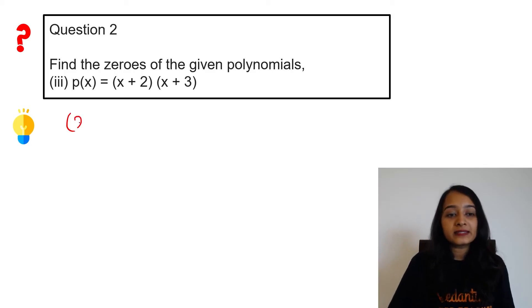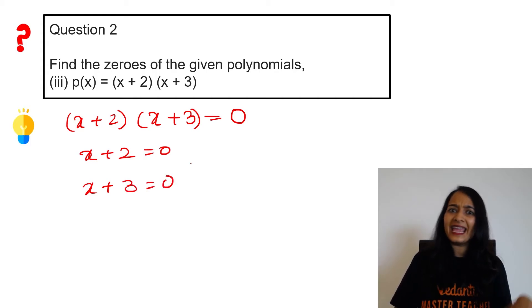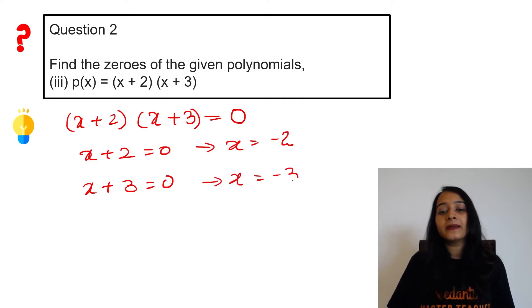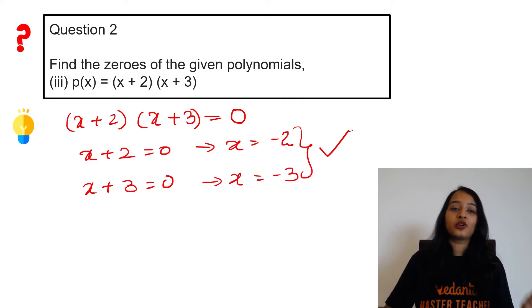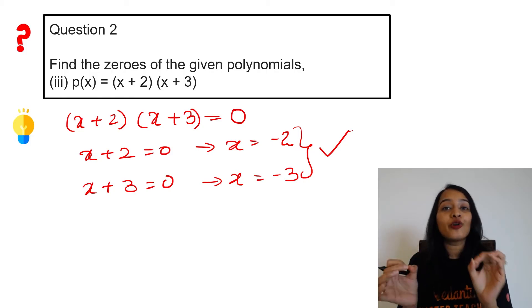Next. Simple. (x + 2)(x + 3) has to be zero. That means either x + 2 = 0 or x + 3 = 0. Same as last question. So x = -2 or x = -3. These two are called the zeros of the polynomial.